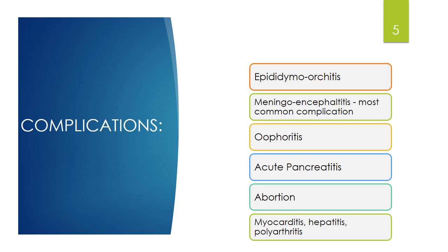Epididymo-orchitis occurs in 25% of post-pubertal males and it causes testicular atrophy; however, sterility is unlikely. The most common complication is meningoencephalitis, which is benign and self-limiting. Other complications include oophoritis, which is less common, acute pancreatitis, and abortion if infection occurs during the first trimester of pregnancy.